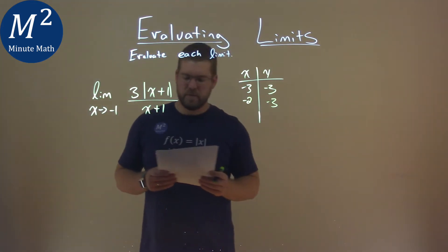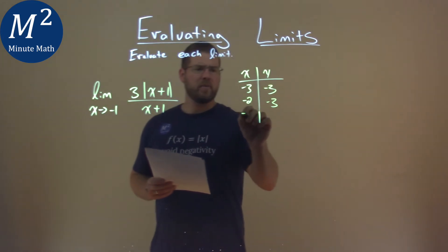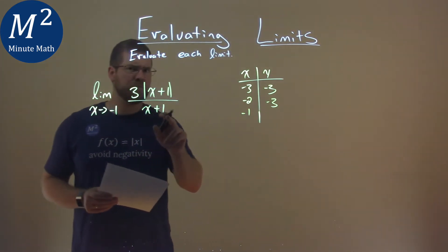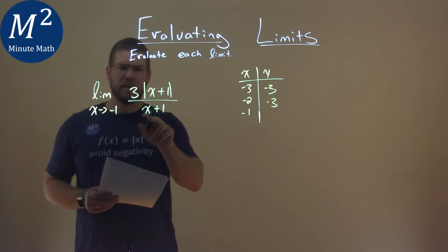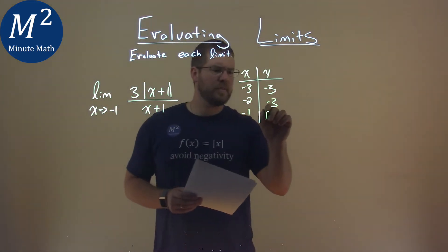Again, we have it there. If we plug a negative 1 in here for x, well, it doesn't exist, right? We can't put negative 1 in the denominator. Again, this is 0 there. We're going to do d and e.